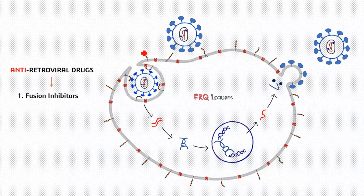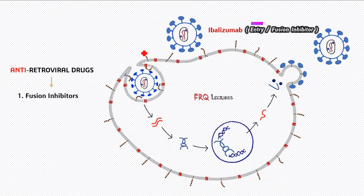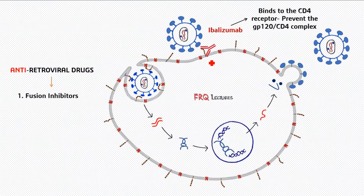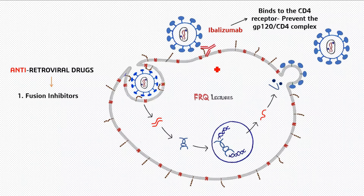The second fusion inhibitor is ibalizumab, which is difficult to pronounce. This drug is a monoclonal antibody that will bind with the CD4 molecule or CD4 receptor, and that will prevent the binding of CD4 with gp120. So it won't allow formation of the gp120–CD4 complex, meaning the replicative cycle would be halted right at that point and won't proceed to the next step.